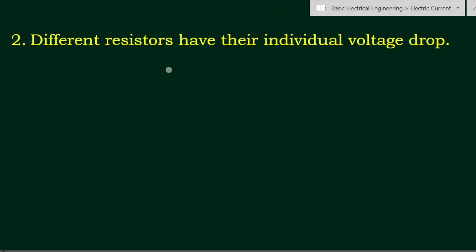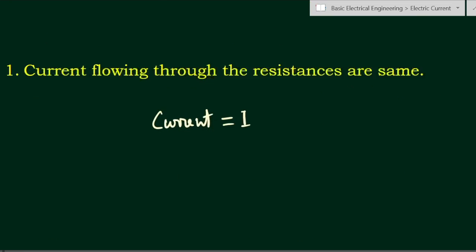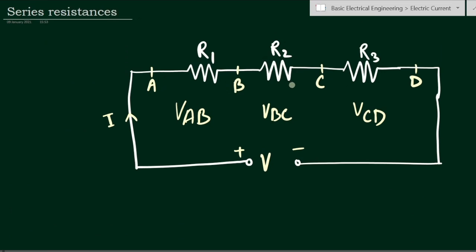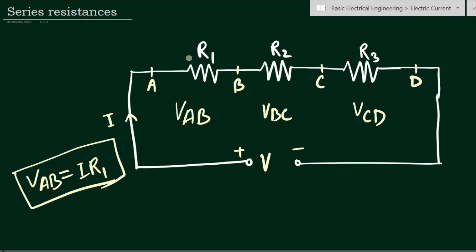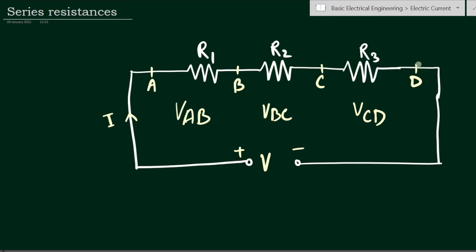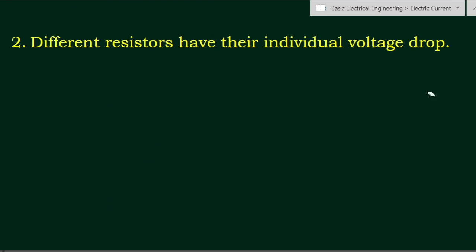The second property is that different resistances have individual voltage drops. Whatever resistances we have considered will have their specific voltage drops. Vab is the voltage drop across R1, Vbc is the voltage drop across R2, and Vcd is the voltage drop across R3. As per Ohm's Law, Vab equals I times R1.